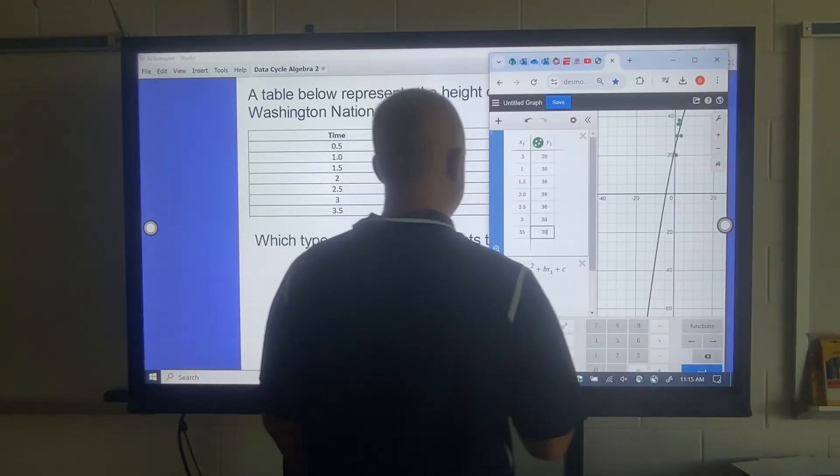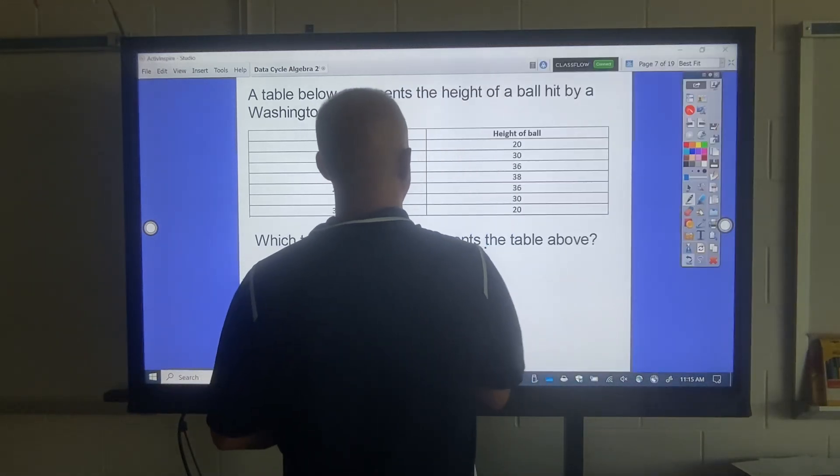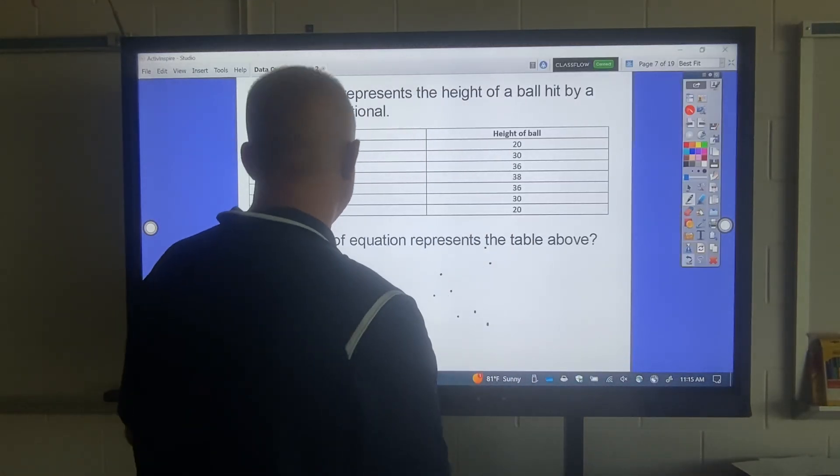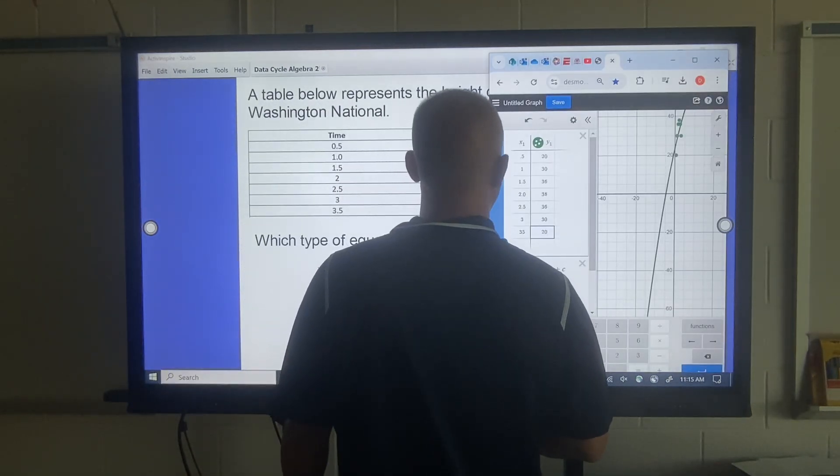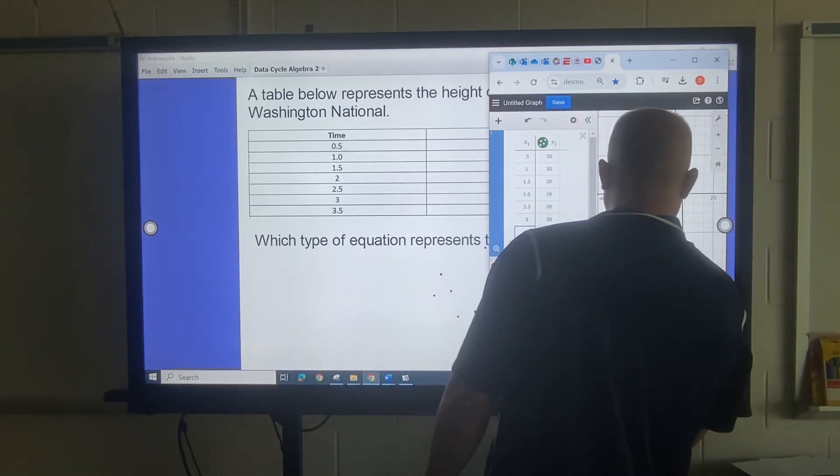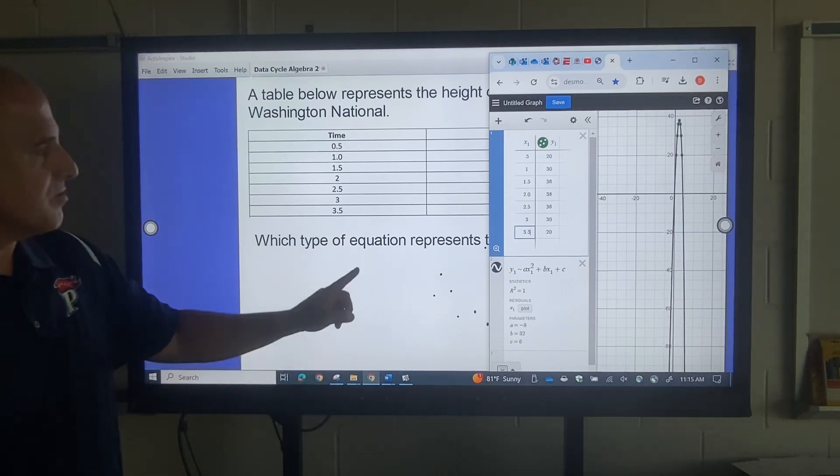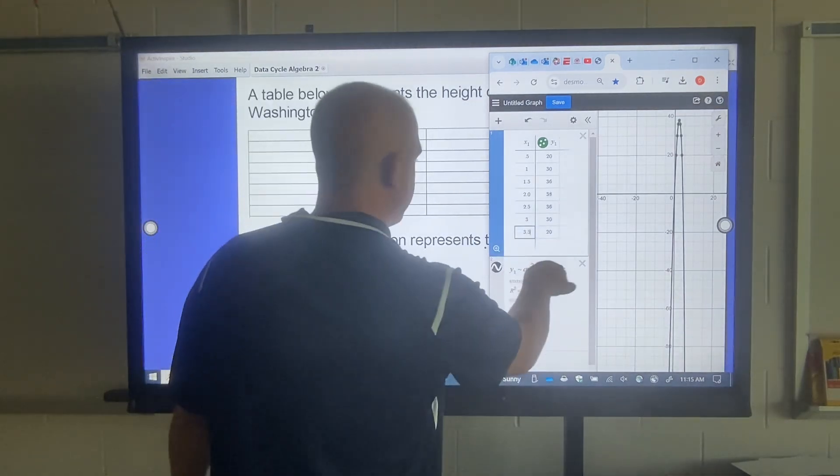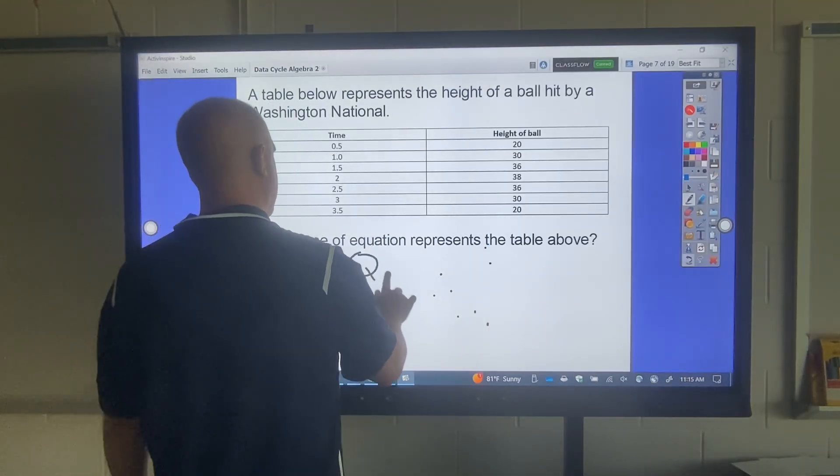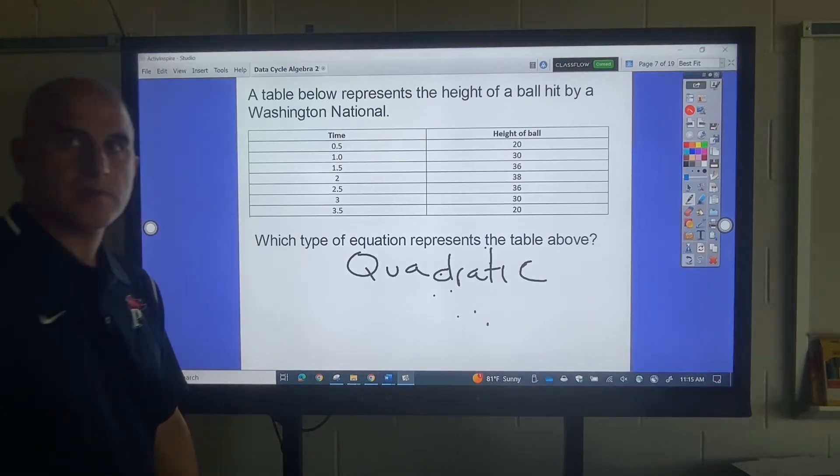And that looks a lot better. I was wondering why that wasn't looking good. And now I got my r squared value as being 1. As you can see, it goes through all the dots. So I'm going to put that in there. So obviously, this is a quadratic.